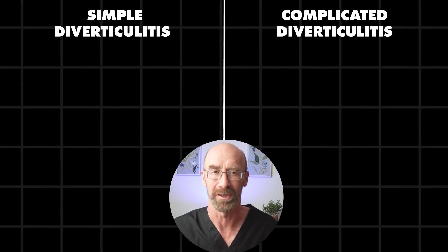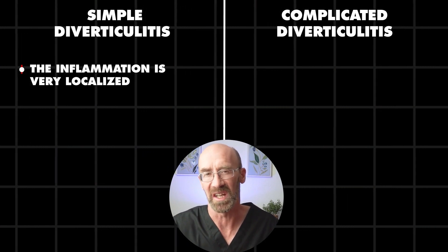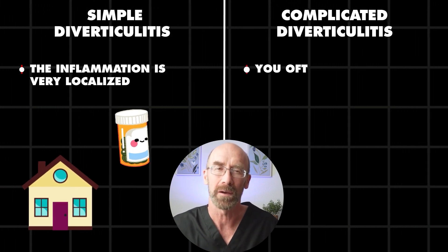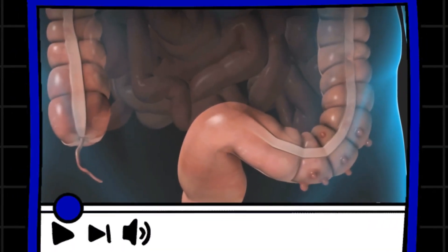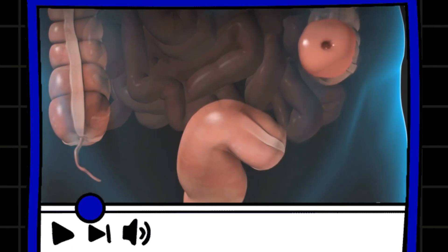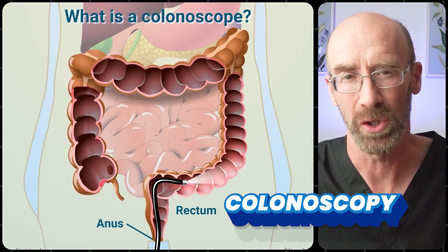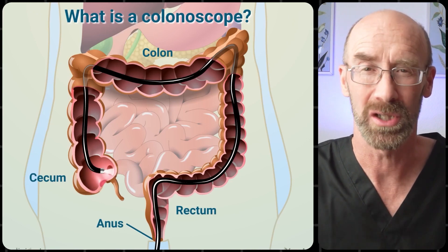One of the hallmarks of CT scans is telling the difference between simple and complicated diverticulitis. Simple diverticulitis means the inflammation is very localized, and you can often just get antibiotics, be treated at home, and check up with your physician later on. Complicated diverticulitis is a whole different beast — you often have to stay in the hospital, may need additional procedures to drain the infection, or even surgery to remove the diseased portion of the bowel. Very frequently after a bout of diverticulitis, you'll get a colonoscopy, where they put a scope from below to look at your colon, because occasionally colon cancer can present and look just like diverticulitis.